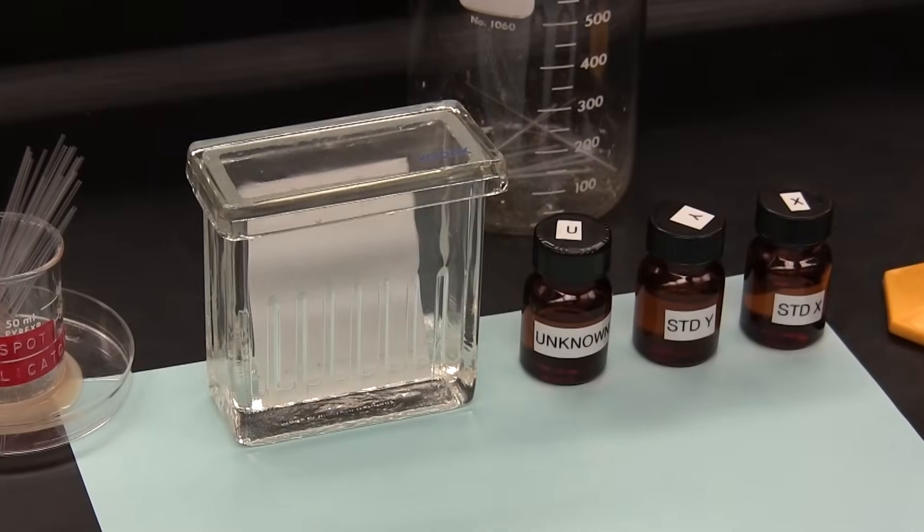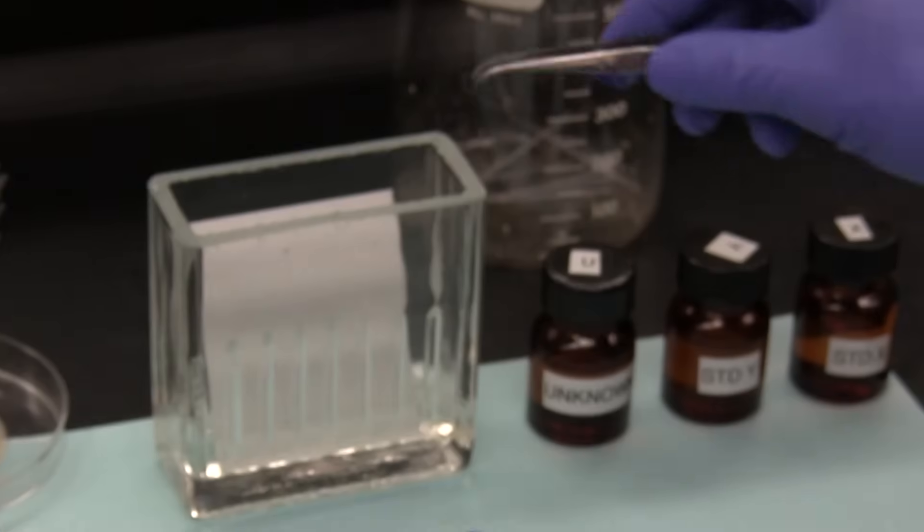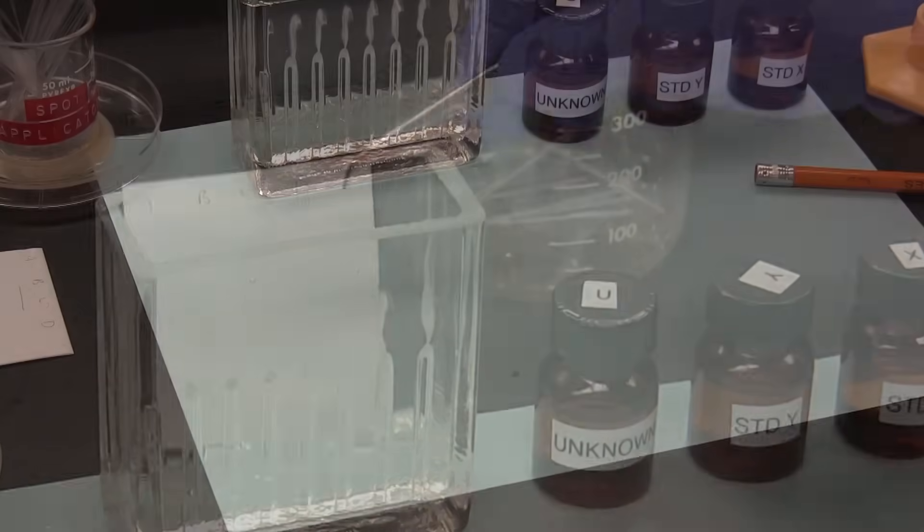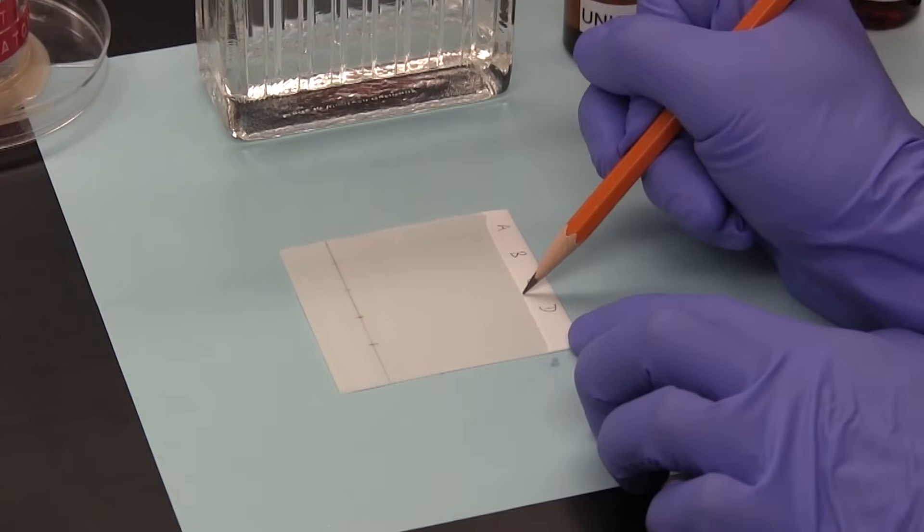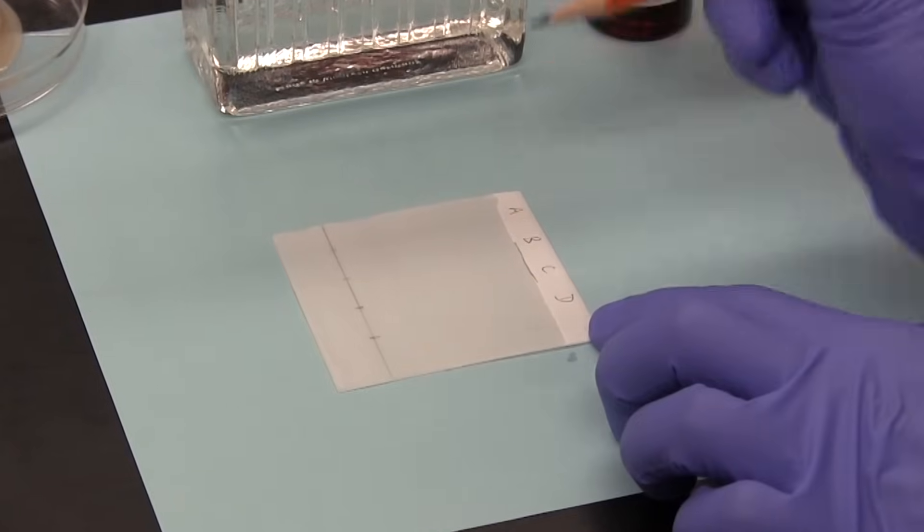When the solvent front is close to the top of the plate, say about a centimeter from the top, the plate is removed from the developing tank. And the solvent front is quickly marked with a pencil.